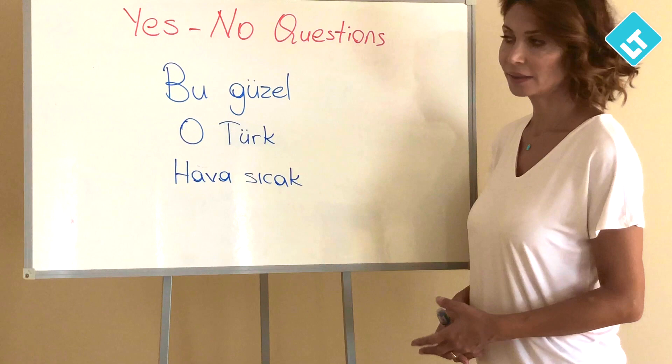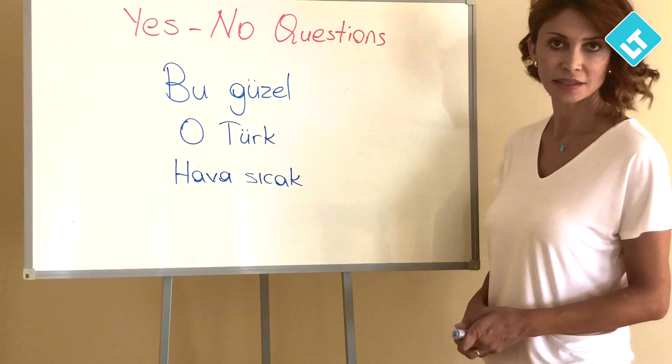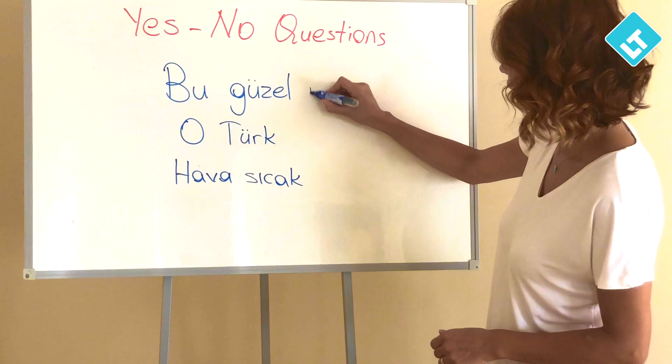Now I will add the question particle mi at the end of the sentence to make a yes-no question. Mi is a particle — it's not a suffix because it's written separately from the word. Let's add mi to the sentences.